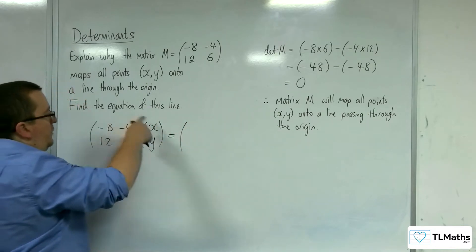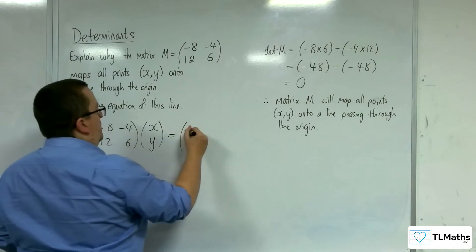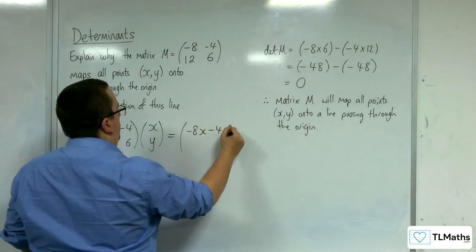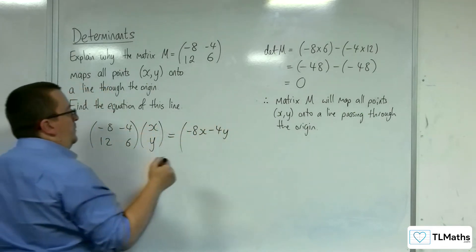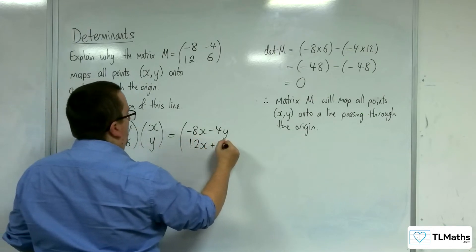So, minus 8, minus 4 multiply with the x, y, so minus 8x, minus 4y, and 12, 6 multiply with the x, y, so 12x plus 6y.